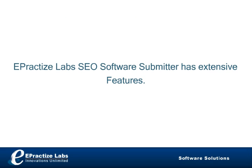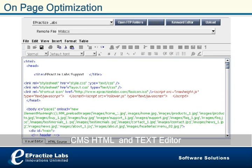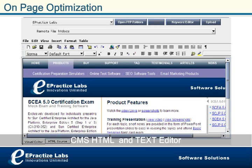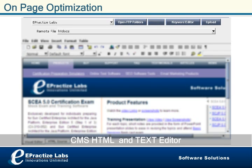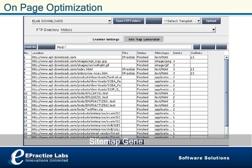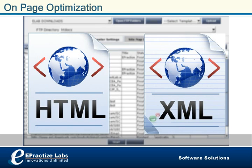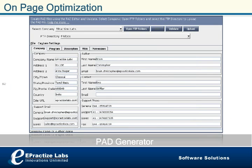ePracticeLabs SEO Software Submitter has extensive features. On-page optimization includes a CMS, HTML, and Text Editor to edit directly from your website FTP folder. It also features a Keyword Editor for title tags, meta tags, image tags, and ref tags with step-by-step instructions, a Site Map Generator for Google Site Map in XML and HTML format, and a Pad XML Generator for your products.